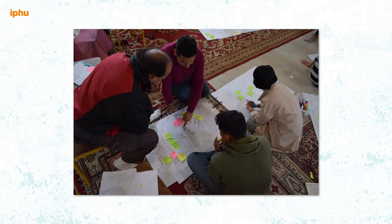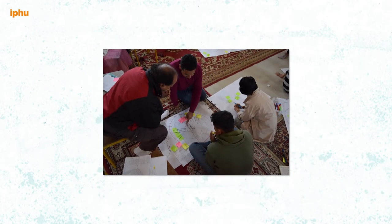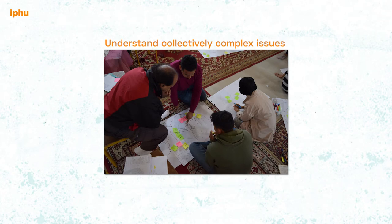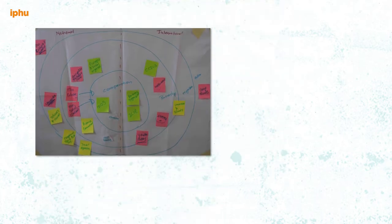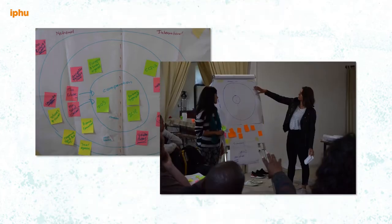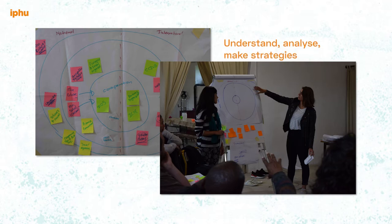Mapping, as any visual tool we work collectively, allows us to better understand the complex issues we are working on. Every person shares their knowledge and all views are collected in a common image. When we have the result, we manage to put a complex reality in front of us and it allows us to understand, to analyze it and to make strategies.